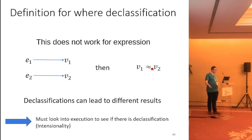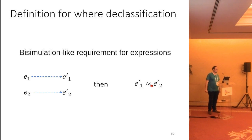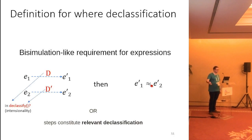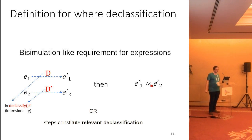We go to a more bisimulation-like setting, where we look at individual execution steps on either side and require that after one execution step on each side, the resulting programs are still indistinguishable. Now we can look at individual execution steps and take declassification into account — specifically, whether the step is happening inside one of these declassifier constructs, which is what D and D' indicate. We only require the resulting programs to remain indistinguishable if we don't have what we call relevant declassification steps. If we do have relevant declassification steps, we expect the two programs to behave differently and therefore give no further guarantees.